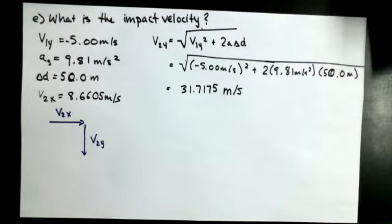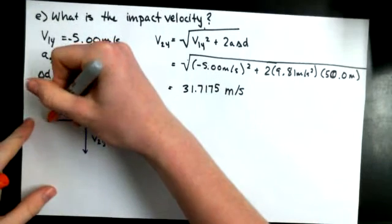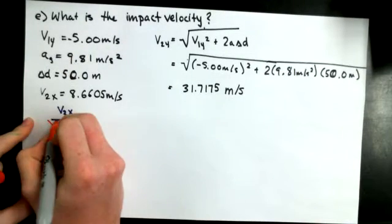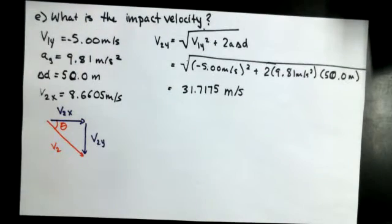So to find V2, we're going to use the Pythagorean Theorem, and V2 equals the square root of V2X squared plus V2Y squared.